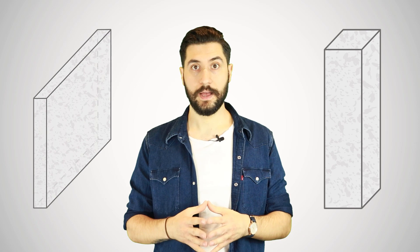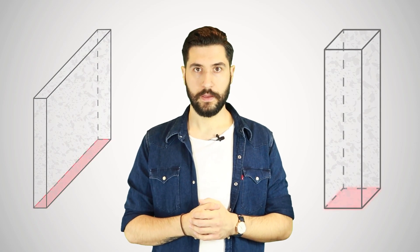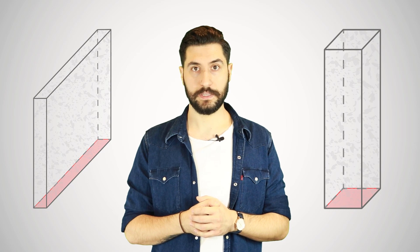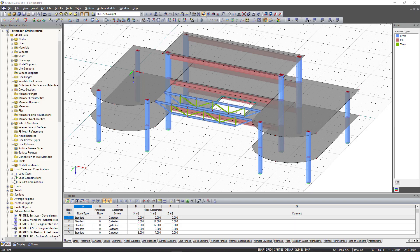Point loads and line loads do not really exist, because all structural components or bodies have an action surface, albeit a very small one. Simplifying and on the safe side, we do not consider them as surface loads but idealize them. In the practical implementation in the structural analysis software RFEM, it looks something like this.